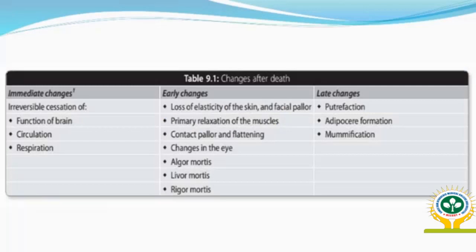Immediate changes include irreversible cessation of function of the brain, circulation, and respiration. Early changes include primary relaxation of muscles, contact pallor, flattening, changes in the eye, algor mortis, livor mortis, and rigor mortis. Late changes include putrefaction, adipocere formation, and mummification. These changes occurring after death in the cadaver are studied under Forensic Thanatology.